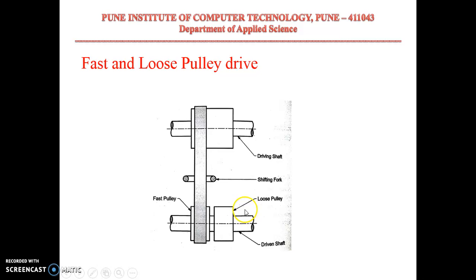In a fast and loose pulley drive, the driving shaft rotates continuously. If you want to stop the driven shaft, you shift the belt from the fast pulley to the loose pulley. The fast pulley is keyed — meaning a key is used between the shaft and the fast pulley — so there is no relative motion between them. In the loose pulley, there is no key, so there is relative motion between the loose pulley and the shaft, resulting in no power transmission. When you don't want to rotate the driven shaft, you shift the belt to the loose pulley using a belt shifter.